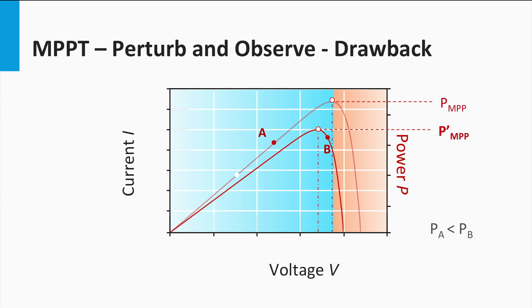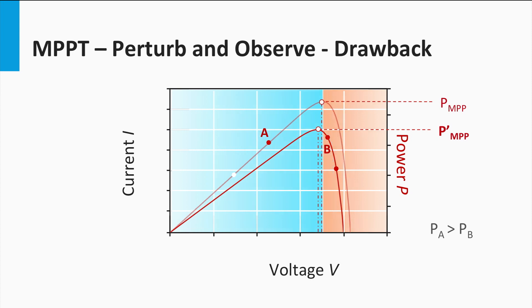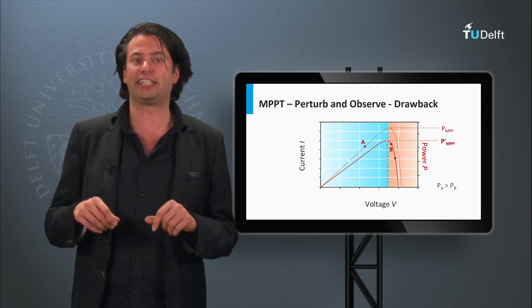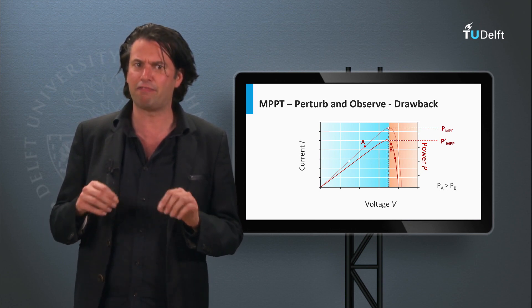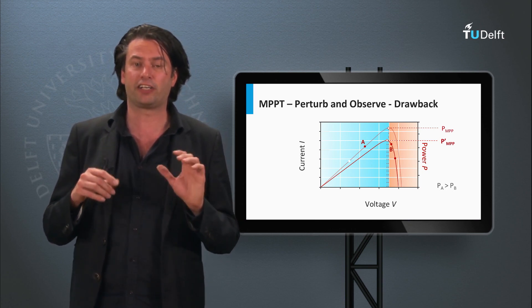But the MPP still lies to the left of point B, which makes the algorithm think that the MPP is to the right of point B. This is detrimental to the speed of convergence of the P&O algorithm, which is one of the critical figures of merit in MPP tracking. Thus drastic changes in weather conditions severely affect the algorithm's efficacy.